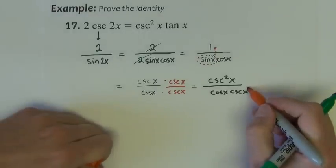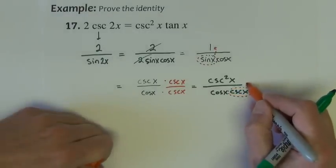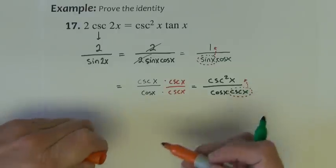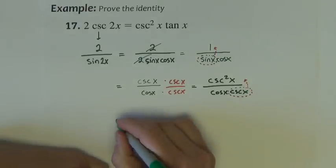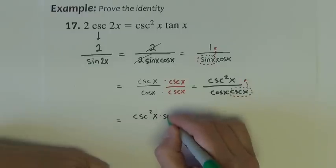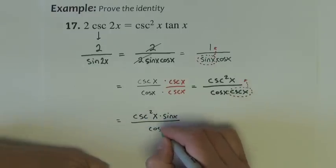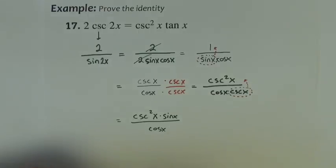This cosecant, let's bring up to the top as its reciprocal. So we have cosecant squared x times sine x, and all that's left in the denominator is cosine x.